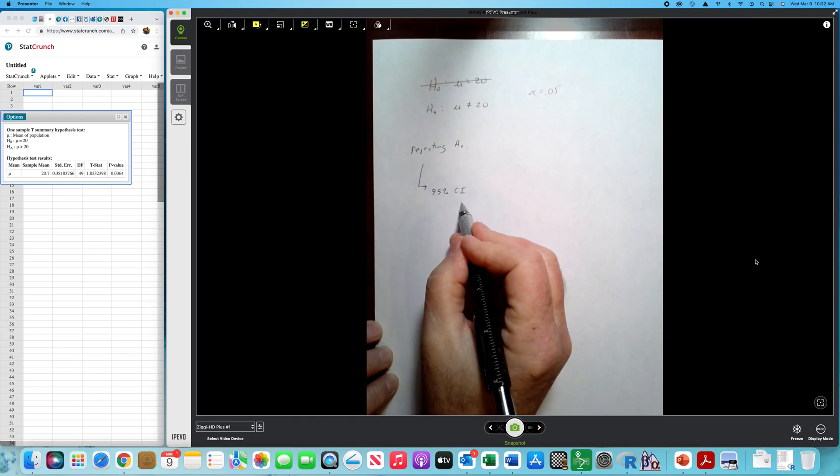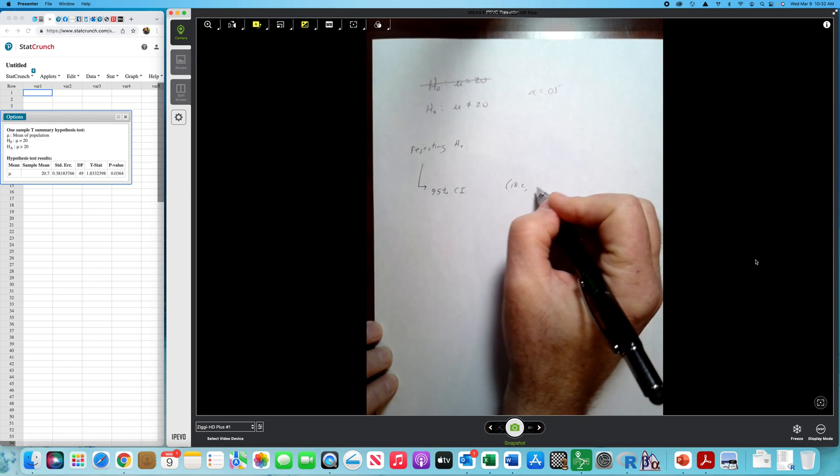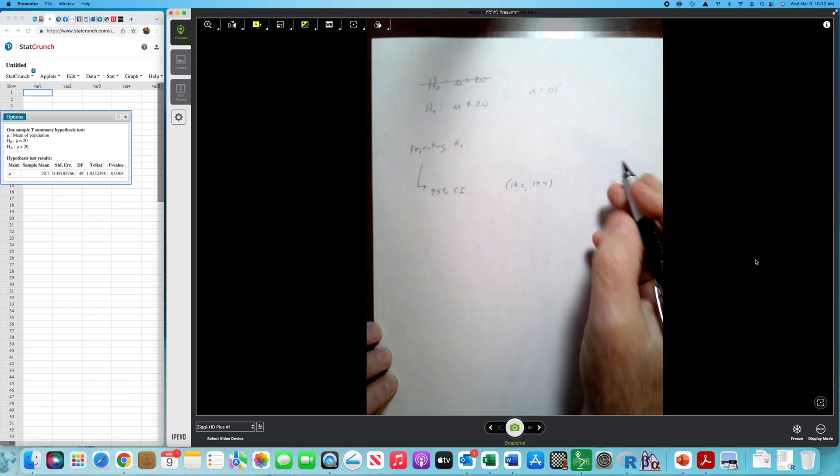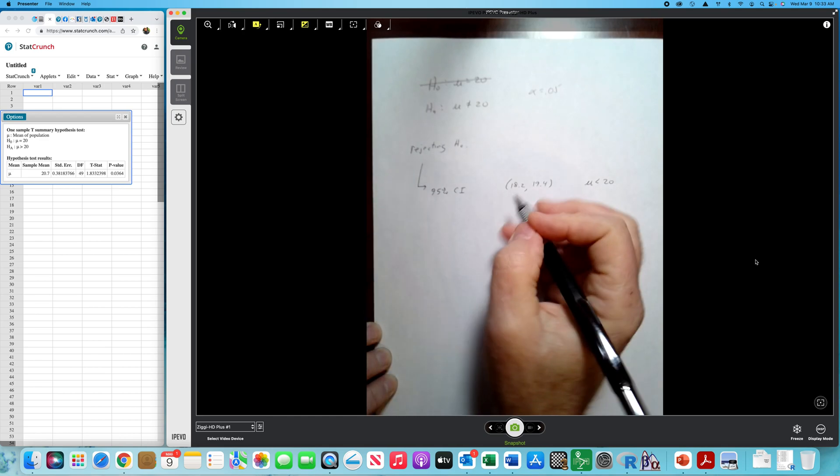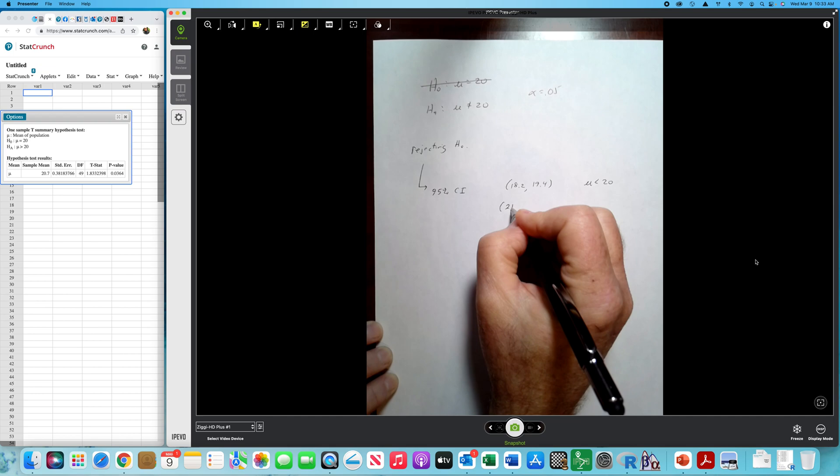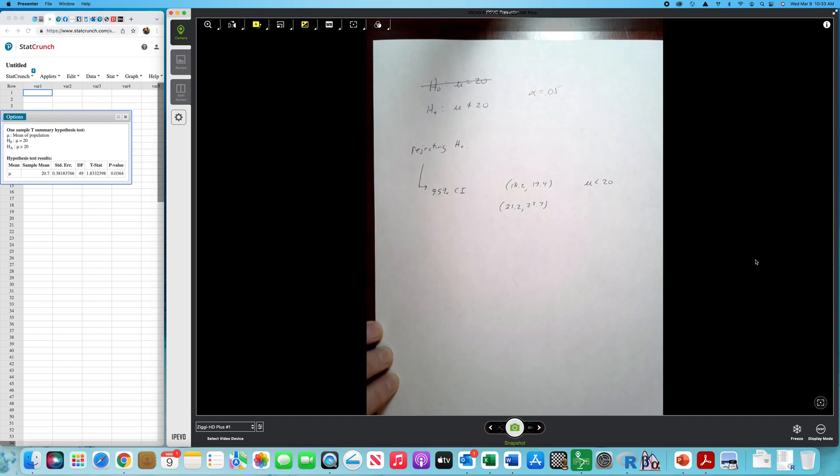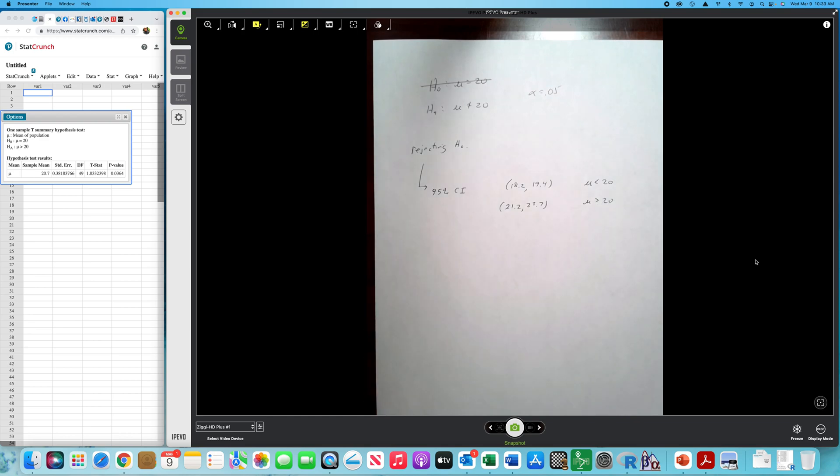So if I get a 95% confidence interval of 18.2 to 19.4, since this entire interval is below 20, I conclude the mu is less than 20. If I get a 95% confidence interval from 21.2 up to 23.7, the entire interval is above 20. So I would conclude, therefore, that the mean is above 20.